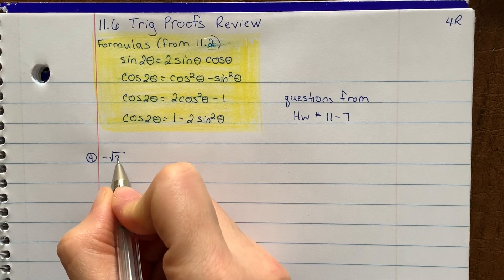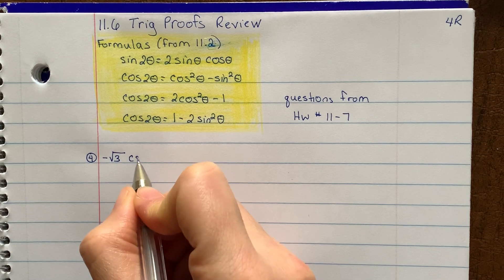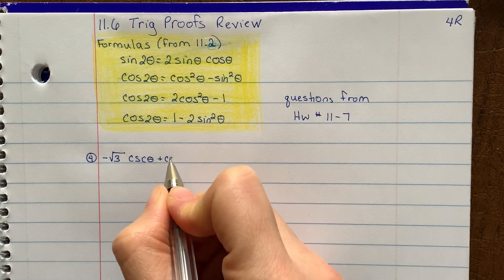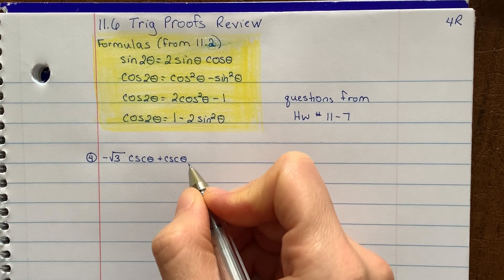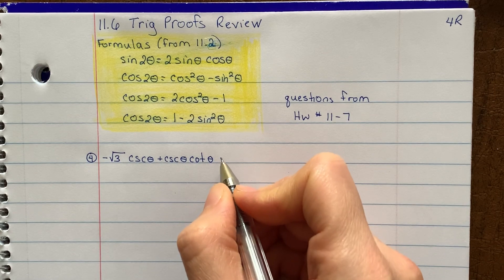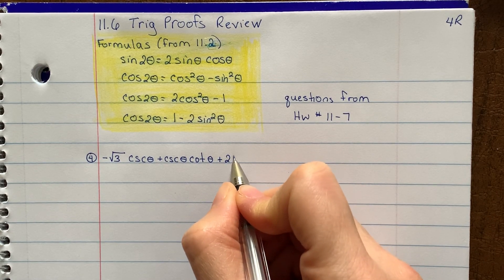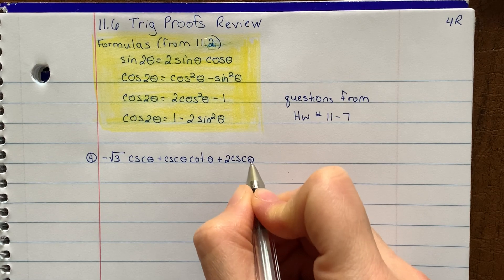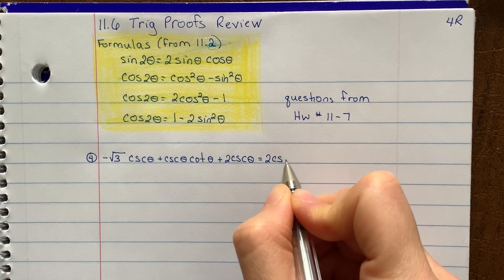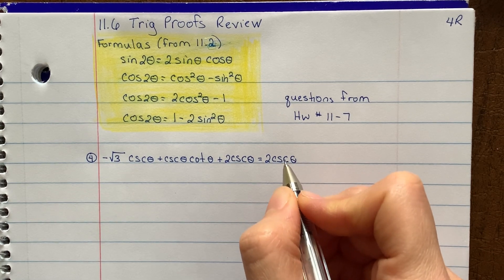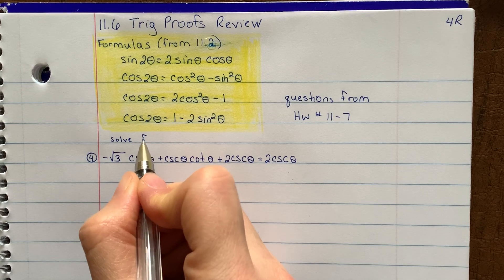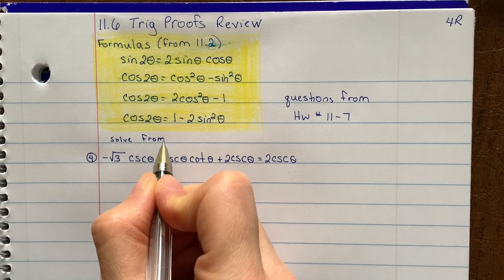Question number four asks: negative square root of 3 times cosecant theta, plus cosecant theta times cotangent theta, plus 2 cosecant theta, equals 2 cosecant theta. The directions are to solve over the interval 0 to 2π.